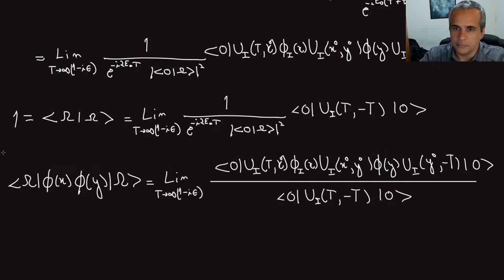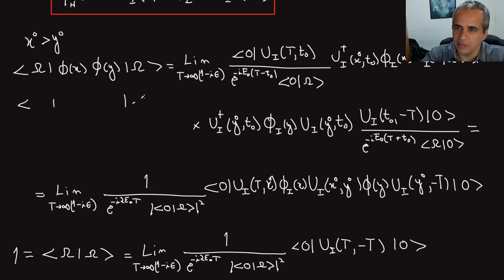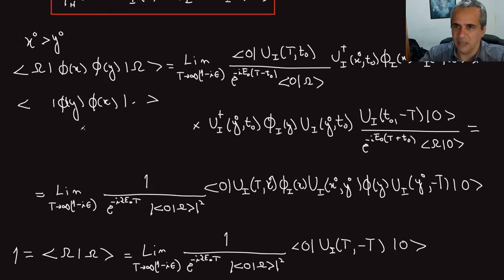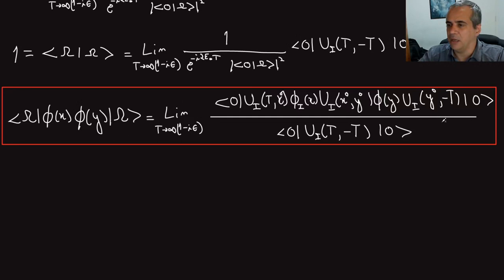For the case y⁰ > x⁰, we get the same expression but with φ(y) to the left of φ(x). Working through the same algebra with the opposite time ordering gives exactly the same final formula, just with x and y exchanged. Since the time-ordering operator T already handles both cases, the master formula applies to the full time-ordered two-point function regardless of the relative ordering of x⁰ and y⁰.